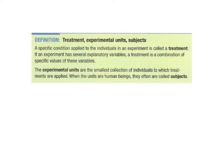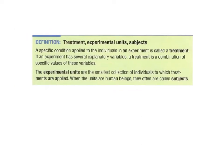Let's look at some vocabulary associated with experiments. The treatment is the specific condition applied to the individuals — in the hormone study, the treatment was whether they got the hormone or the placebo pill. The experimental units are the smallest collection of individuals to which the treatment has been applied. If doing an experiment with humans, those are usually called subjects.